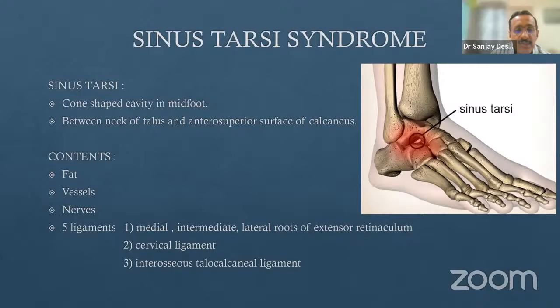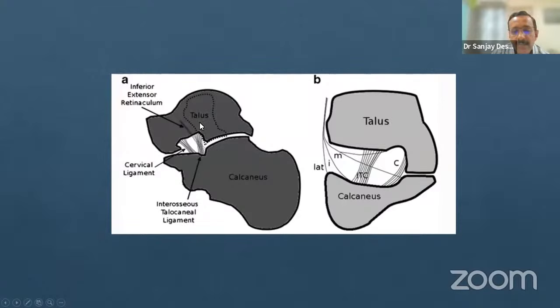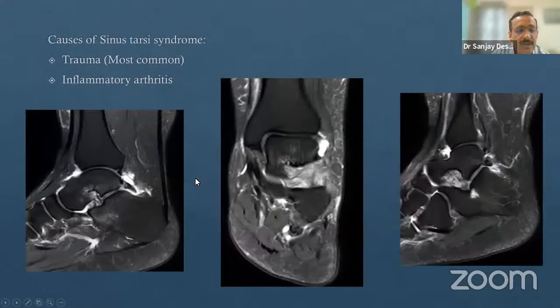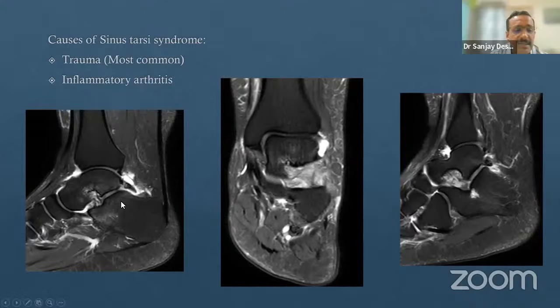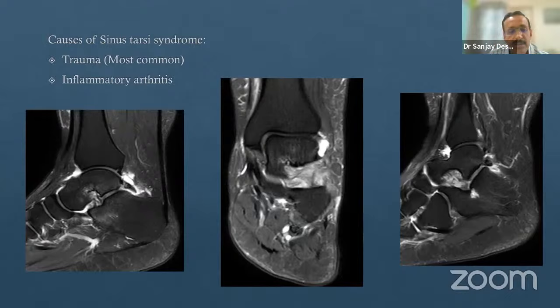There are two distinct syndromes: tarsal tunnel syndrome along the posterior tibial neurovascular bundle, and sinus tarsi syndrome, which is more centrally and laterally located in the hindfoot. These should not be confused as they are at different locations and have different etiologies.